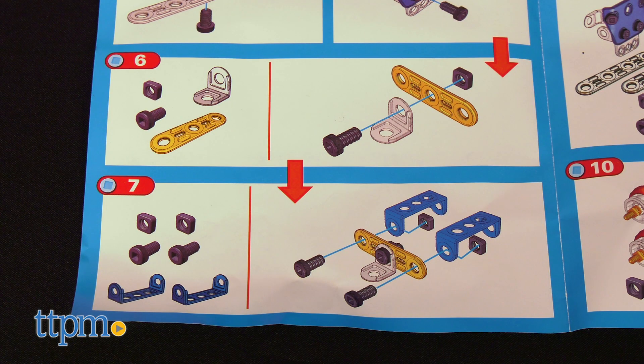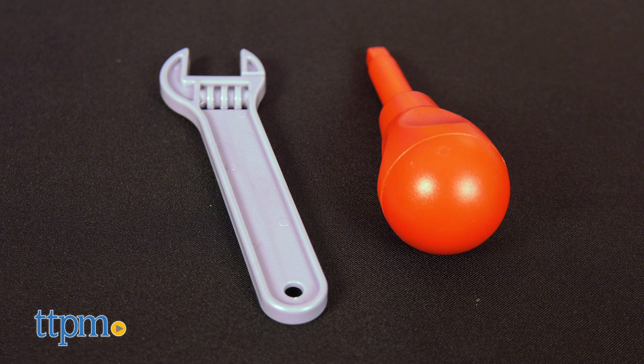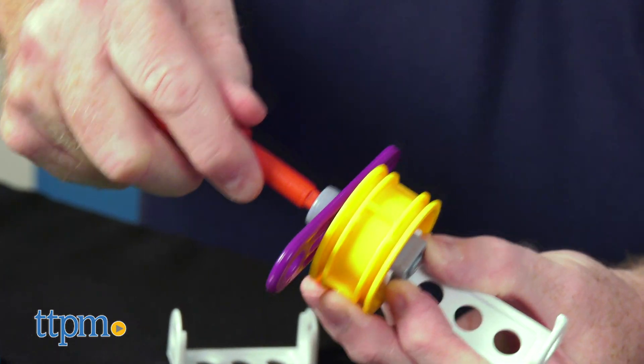The instructions are a series of pictures, so builders must match the action to the picture. The Engineer Junior Build and Play even comes with easy-to-use tools for construction.